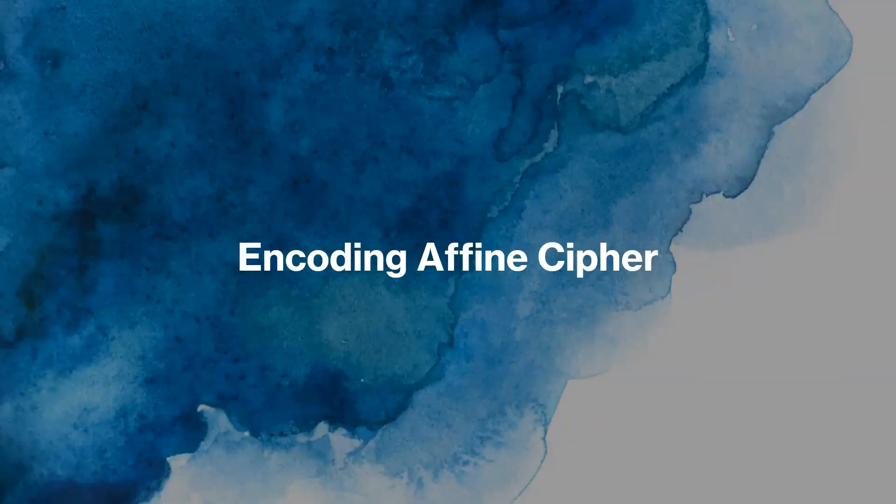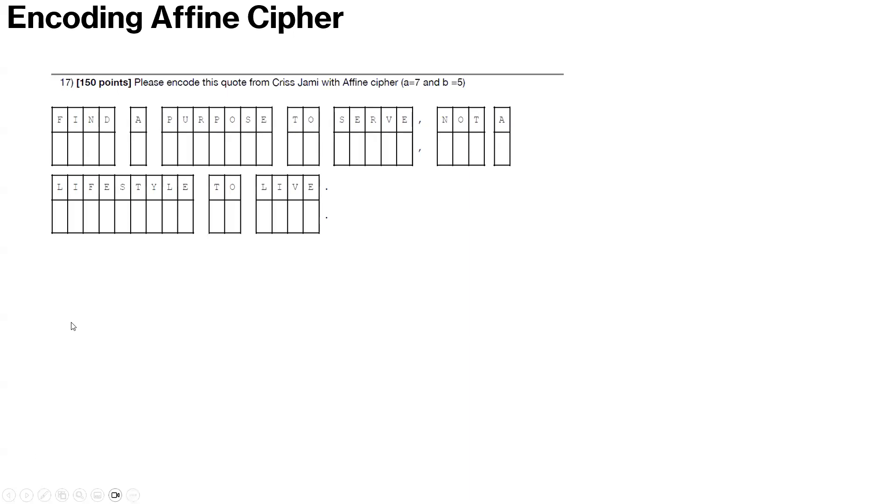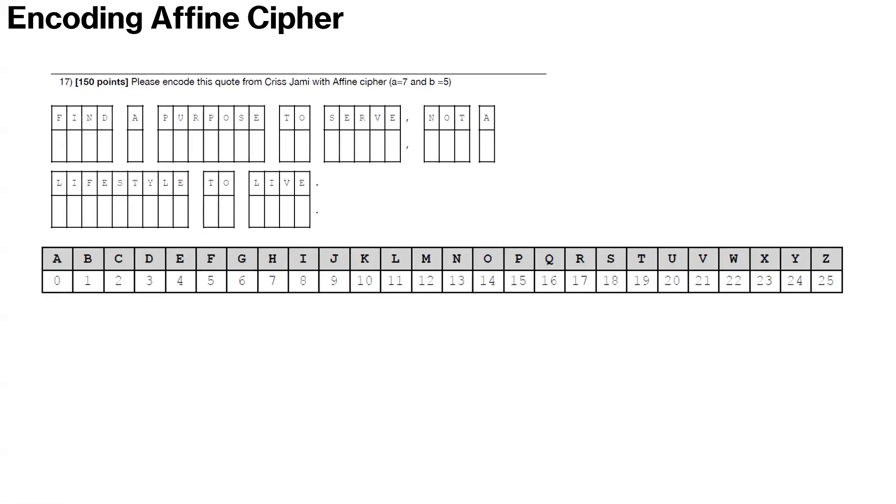Hey friends, today we are going to talk about encoding affine ciphers and we will go through the steps of how you can encode it. This is an affine cipher which appeared in Sylvania, Ohio Invitational in December 2023. The goal was to encode a quote from Chris Jamy with an affine cipher of A equal to 7 and B equal to 5. Find a purpose to serve, not a lifestyle to live. So let's talk about the steps to solving an affine cipher.